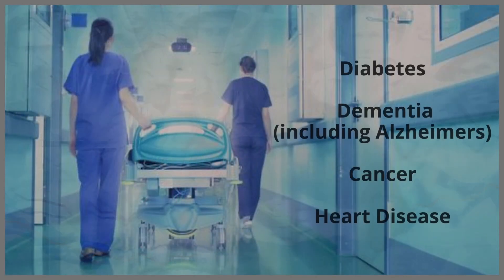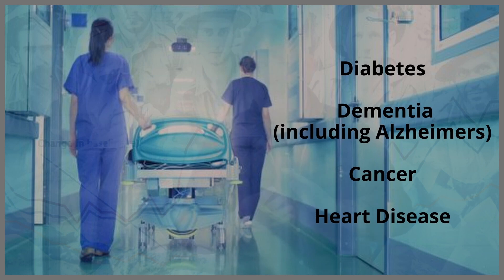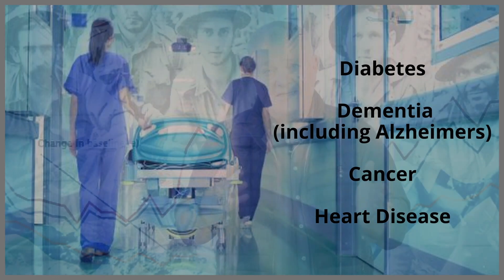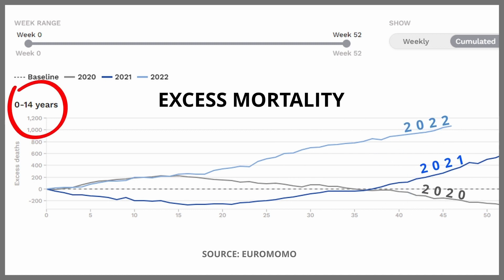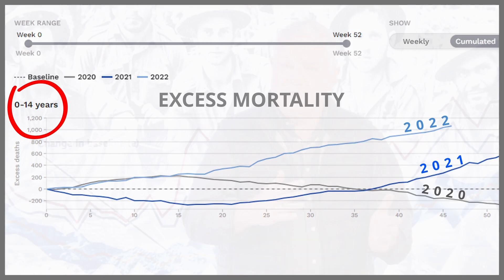We're getting an incredible spike in dementia and diabetes — 20% for both of them — both increasing 20, 21%. Diabetes, dementia, cancer, and heart — they're the four major causes of death. Most people are over 75, but the numbers are increasing. In Europe, the 0 to 14 age group is exploding at about 300, 400, even 500% in some locations. So there's a shift to younger groups, and it's starting to happen in Australia.